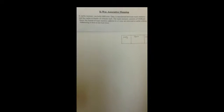We are going to look at a pretty simple example. A cache memory can hold 64 kilobytes. Data is transferred between main memory and the cache in blocks of 32 bytes each. The main memory consists of 2 gigabytes. Show the format of main memory address in a two-way set associative cache scheme.